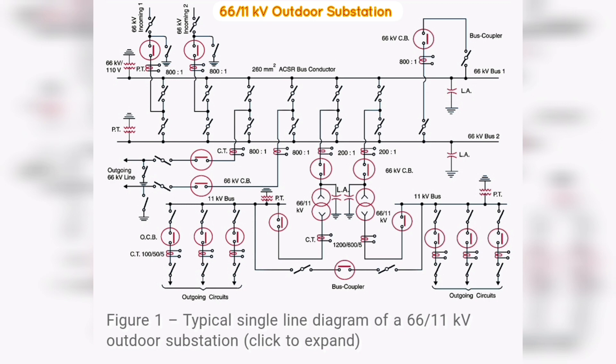The PT is connected right on the point where the line is terminated. The CTs are connected at the terminals of each circuit breaker. Note: the lightning arrestors are connected near the transformer terminals on the high voltage side to protect them from lightning strokes.